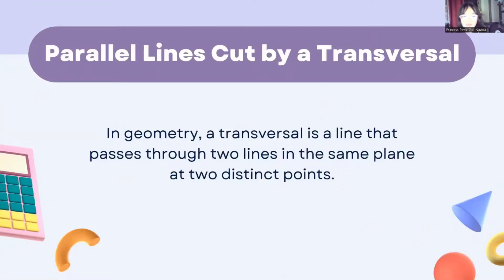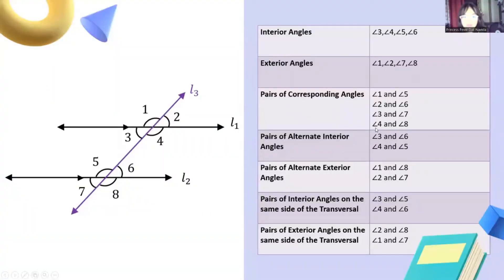For our next topic, we have the parallel lines cut by a transversal. In geometry, a transversal is a line that passes through two lines in the same plane at two distinct points. Before we go on to the given problem, here is a shorter overview about the parallel lines and the transversal.